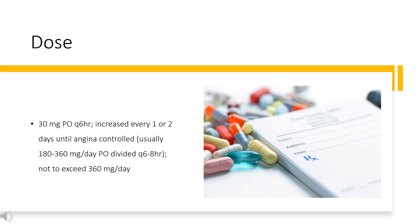Hypertension — Cartazem-CD, Cartia-XT, Dilt-CD: 180 to 240 mg/day PO, titrate after 14 days; maintenance range usually 180 to 420 mg/day, not to exceed 480 mg per day. Dilacore-XR, Dilt-XR: 180 to 240 mg/day PO, titrate after 14 days; maintenance range usually 180 to 420 mg/day, not to exceed 540 mg per day.